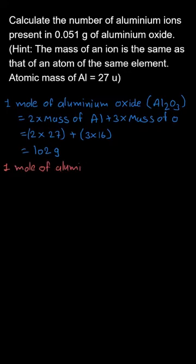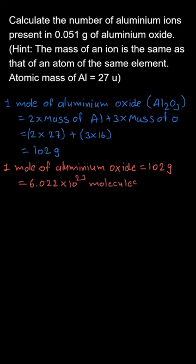Since one mole of aluminium oxide has a mass of 102 grams, the number of molecules present in 102 grams of aluminium oxide will be 6.022 × 10²³.